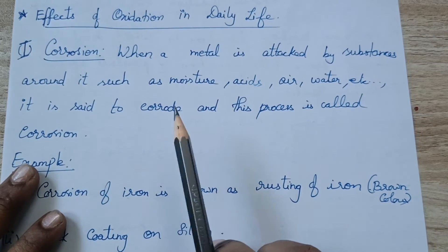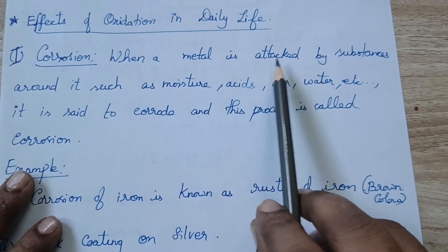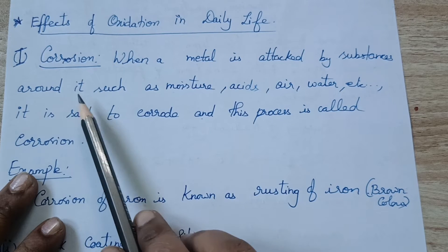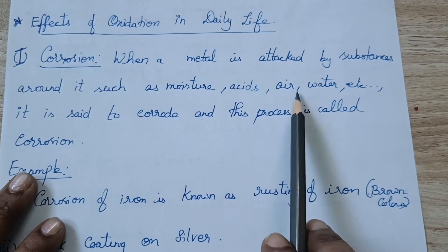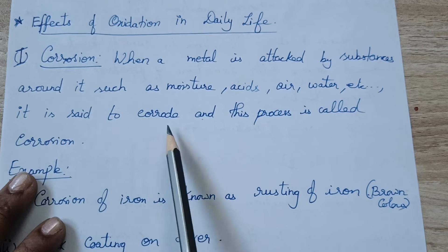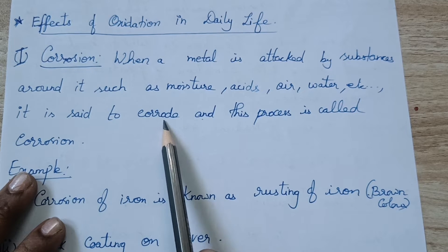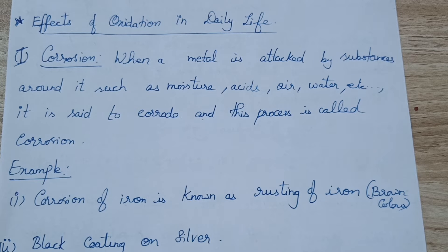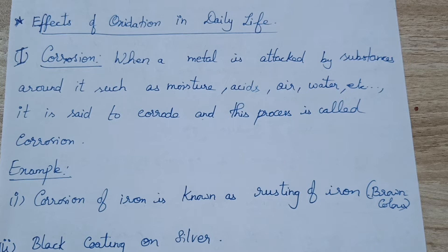So we will see what is meant by corrosion. When a metal is attacked by substances around it such as moisture, acids, air, water, etc., it is said to corrode. The outer layer of the metal will be eroded, deteriorated, or corroded. It reacts with atmospheric substances like moisture, air, water, or acid, and the outer layer of the metal gets affected.